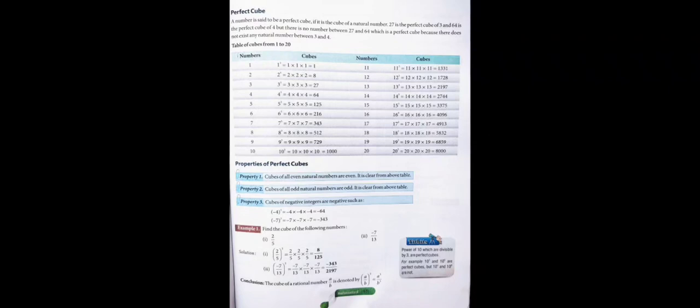Looking at the table: cube of 1 is 1, cube of 2 is 8, cube of 3 is 27, cube of 4 is 64. Here we can see that 2 is an even number and its cube is 8, which is also even. So whenever we find the cube of an even number, the result is also even. Similarly, the cube of 5 is 125, which is an odd number — so the cube of an odd number is also odd.